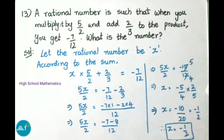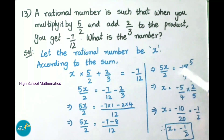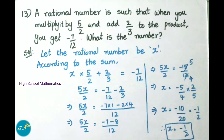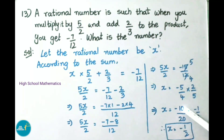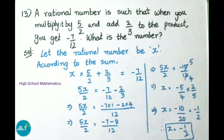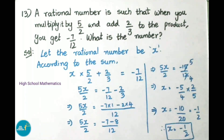Simplifying minus 15/12: 15 is 5 times 3 and 12 is 4 times 3, so it becomes minus 5/4. Transposing 5/2 becomes its reciprocal 2/5. Therefore x equals minus 5/4 times 2/5, which is minus 10/20, simplified to minus 1/2. Therefore the rational number is minus 1/2.